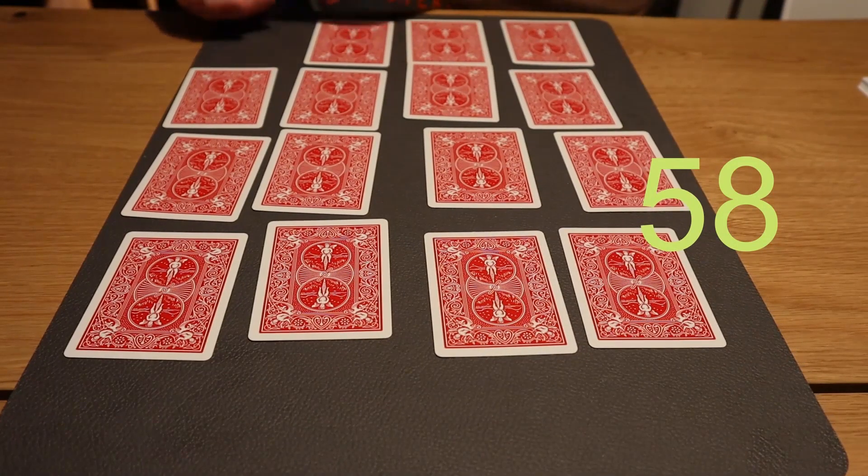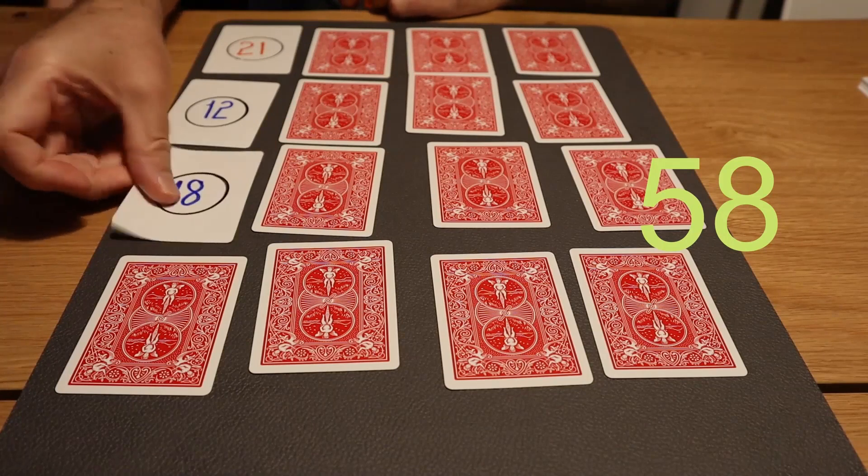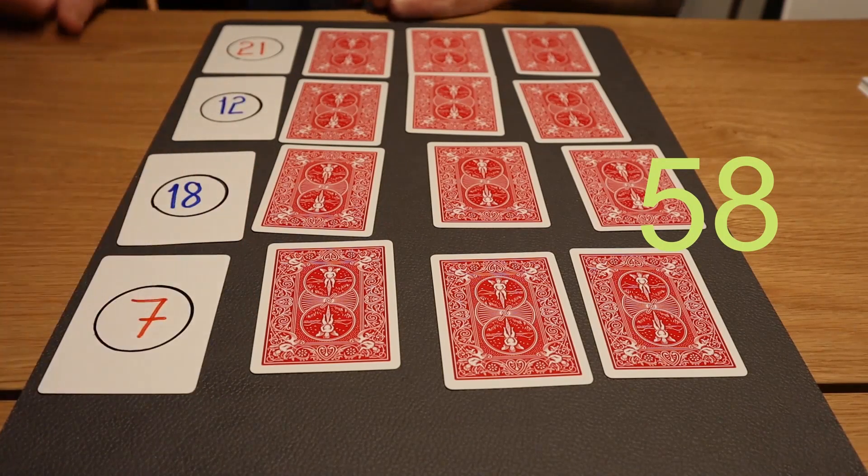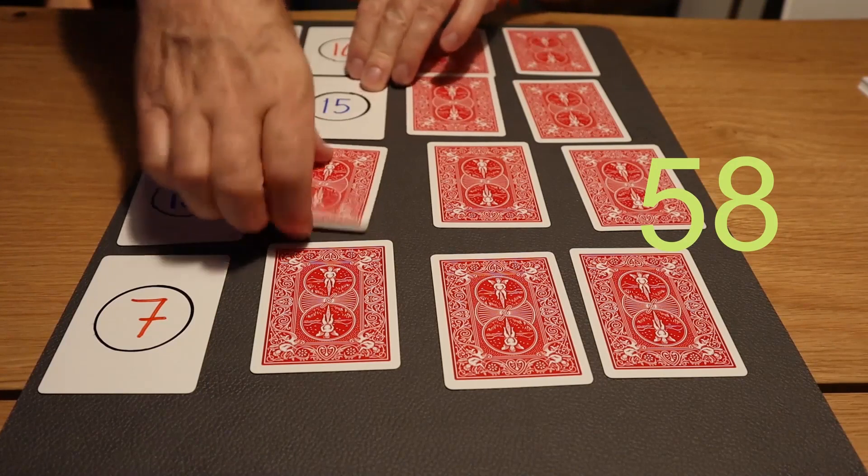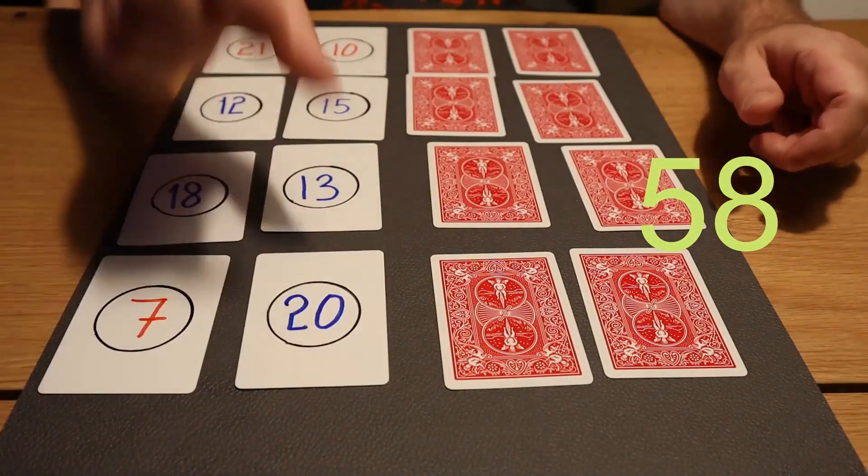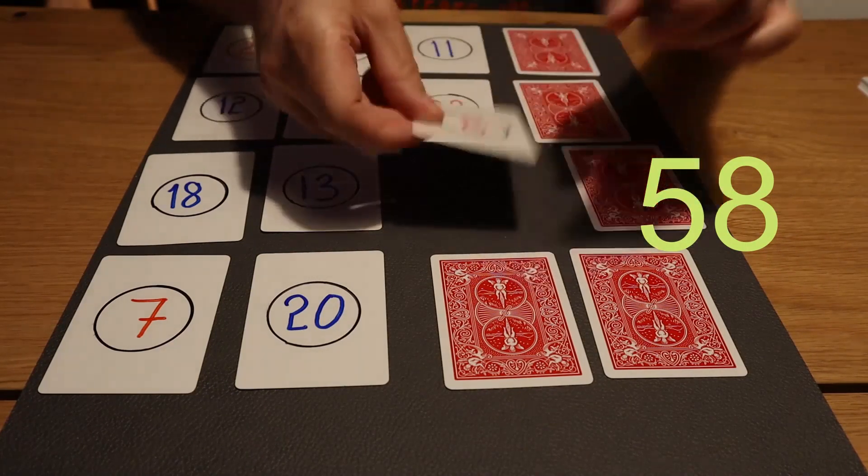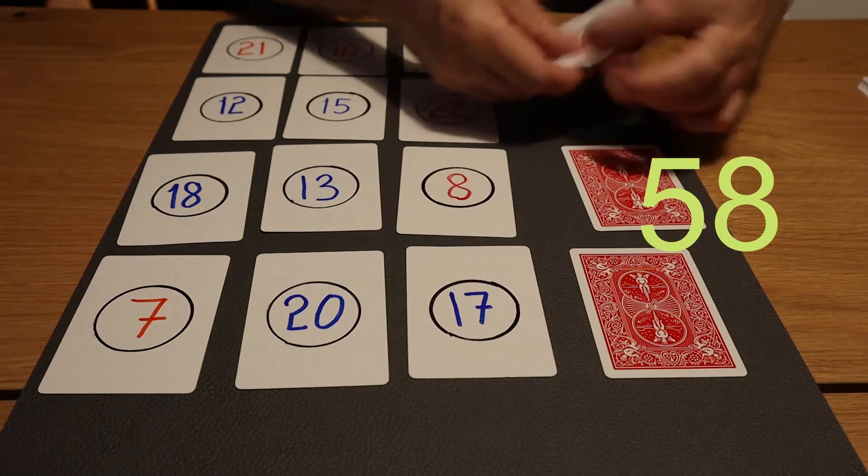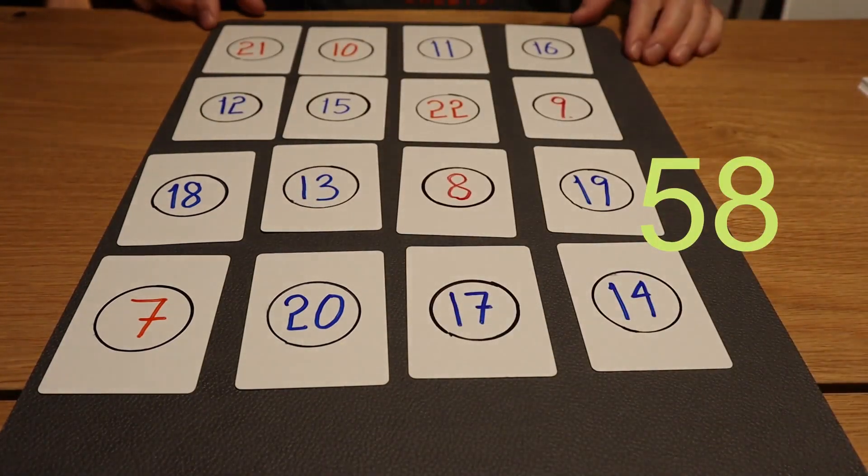Let's see. 21 plus 12 is 33 plus 18, 15 is 40, 46, and 7. That is 58. Take the next one. 10 plus 15 is 25, plus 13 is 38, plus 20 is 58. 11, 22 is 33, 41, and 17. That's also 58. The last one here. 16, 9, 25, and 19 is 44, plus 14 is also 58.